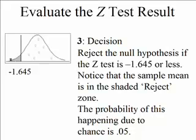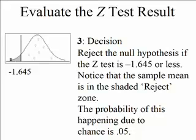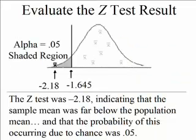Next, we evaluate our z-test result. We'll reject the null hypothesis if the z-test is 1.645 standard errors away from the mean or further out. Notice that the sample mean for our particular research is in that shaded reject zone. Our sample mean was 2.18 standard errors below the mean — that negative 2.18 means we're below the mean, and 2.18 is beyond our decision criterion of negative 1.645. So our sample mean is not 1 or even 2 standard errors below the mean, but 2.18 standard errors below. We'll reject our null. The probability of that happening due to chance is 0.05 or less.